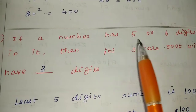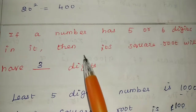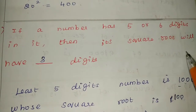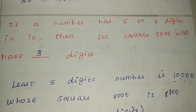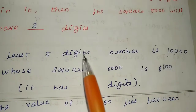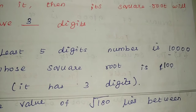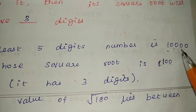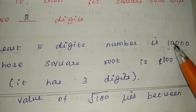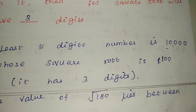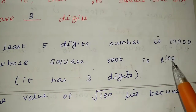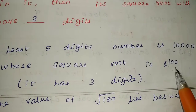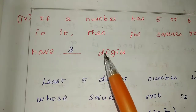Fourth one: if a number has 5 or 6 digits in it, then its square root will have how many digits? For example, the least 5-digit number is 10,000. The square root of 10,000 is 100. So 100 has how many digits? 3 digits. The answer is 3.